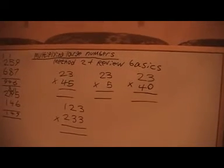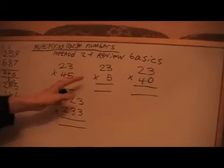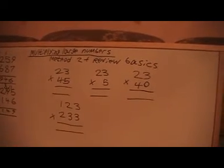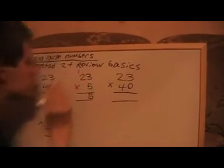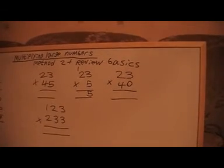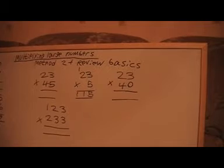So we'll do 23 times 45. We'll just do 23 times 5 first. 3 times 5 is 15, carry the 1. 2 times 5 is 10, plus the 1 is 11. We're carrying 1 because it went up to 10, so that's 115.